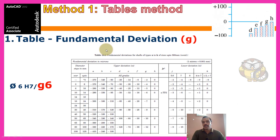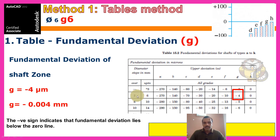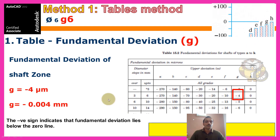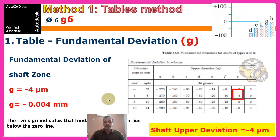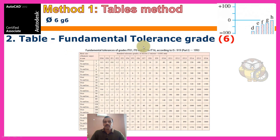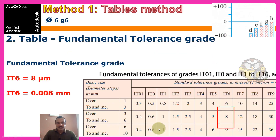Now for G6: the fundamental deviation of G, according to the diameter range 3 to 6, is minus 4 microns. The negative sign indicates the fundamental deviation lies below the zero line — this is the negative region, below the reference line. The value is 4 microns. For IT grade 6, diameter range 3 to 6 gives 8 microns.